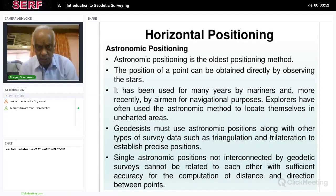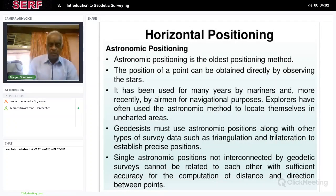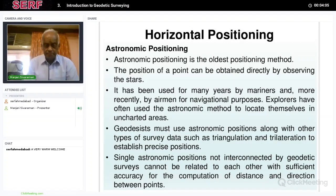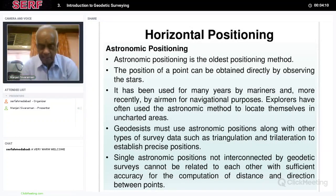Single astronomic observations not interconnected by geodetic surveys cannot be related to each other with sufficient accuracy for the computation of distance and direction between points. So basically, in astronomical positioning, the positions of different points are determined using astronomy, and these points are interconnected by surveys.